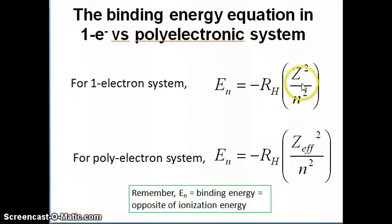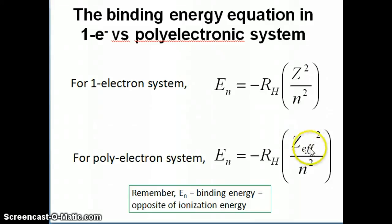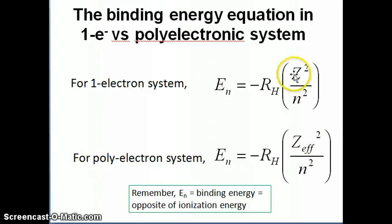To write the binding energy equation for a multi-electron atom, the only change from the one-electron equation is replacing Z with Z-effective. Z-effective is a function of both shielding and penetration, and it depends not just on n (the principal quantum number) but also on l (the angular momentum quantum number) — what kind of orbital the electron is in. An s orbital can penetrate more than a p orbital, and a p orbital more than a d orbital. So Z-effective is always less than the actual atomic number Z.